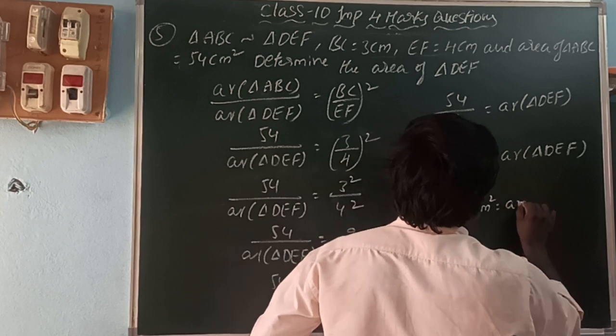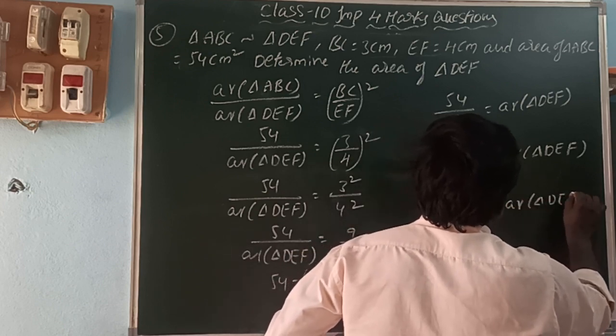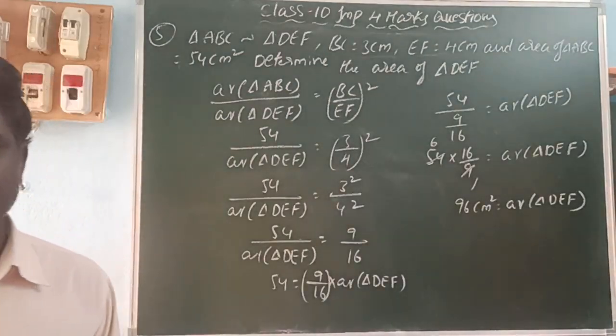Therefore, the area of triangle DEF is 96 cm².